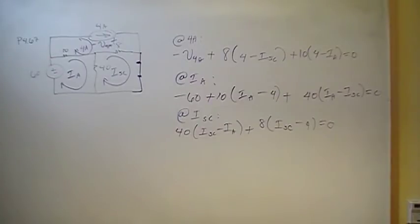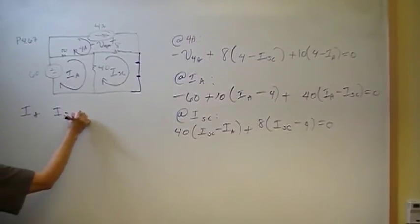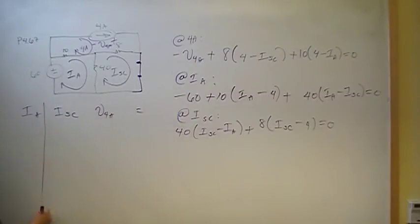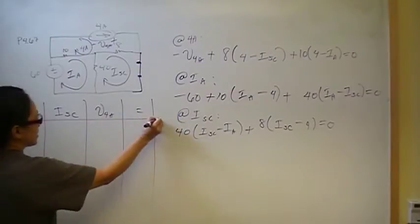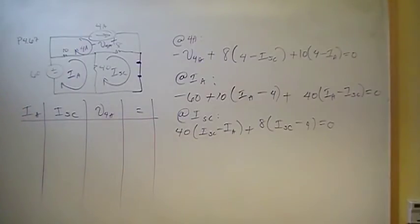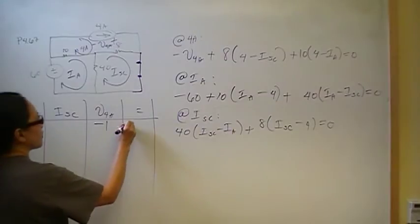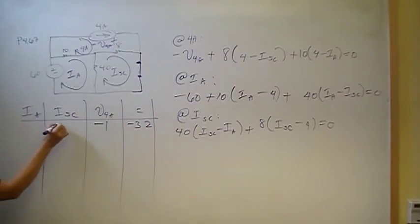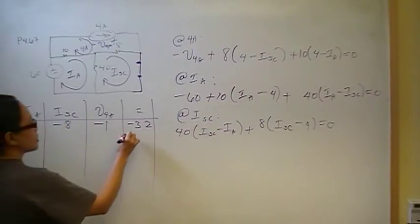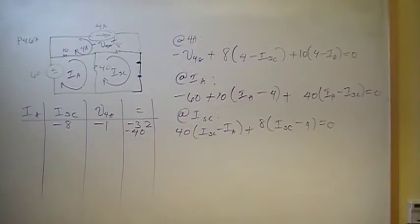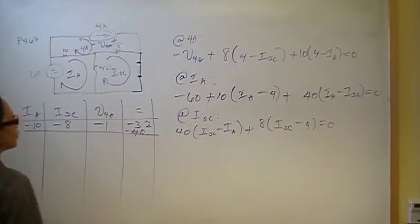We'll inventory the coefficients of the unknowns: Ia, I short circuit, and V_4amp. In the first equation, the coefficient of V_4amp is negative 1; the constant negative 32 goes to the right-hand side; the coefficient of I short circuit is negative 8; the constant negative 40 goes to the right-hand side; and the coefficient of Ia is negative 10. That's the first row of our matrix.